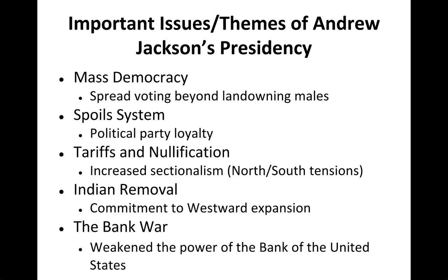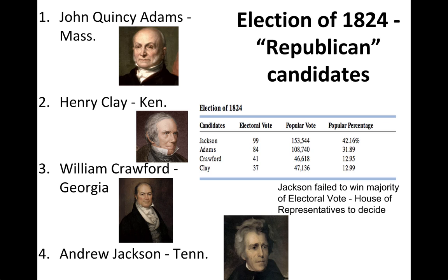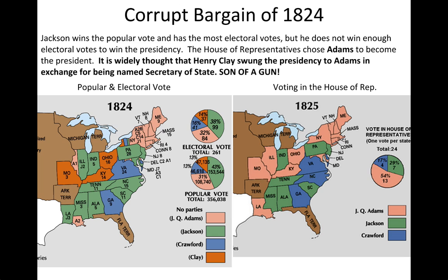This all stems from the election of 1824. John Quincy Adams, Henry Clay, William Crawford, and Andrew Jackson were the four guys running for president. Jackson does very well — he gets 99 electoral votes, Adams gets 84. Jackson wins the popular vote and gets the most electoral votes, but he does not get the majority, so the decision goes to the House of Representatives. Henry Clay, who is also running and is the Speaker of the House, is kind of in charge of deciding how the House will choose.